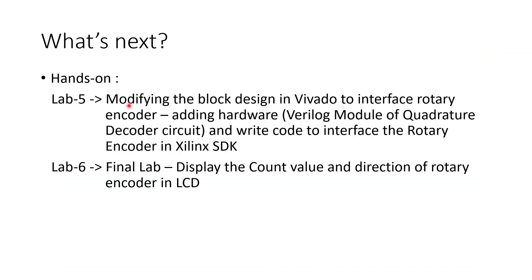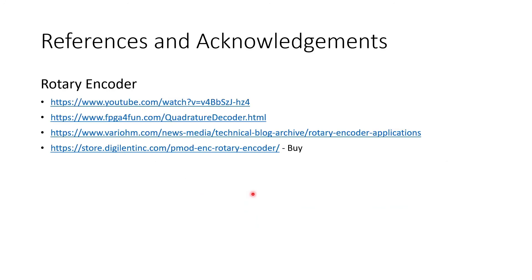So what's next? Lab 5. The next lab will be on modifying the block design Vivado to interface the rotary encoder. That is the adding hardware part wherein we add the Verilog module of the quadrature decoder circuit. And then we'll write the code to interface the rotary encoder in Xilinx SDK. After that, we'll be having the final lab and the end of this module would be to display the count value and direction of the rotary encoder in LCD. So these are a few resources. Either you can buy the Digilent PMOD rotary encoder or you can make it on your own. So that's it. Thanks for watching. I'll see you next time. Bye.